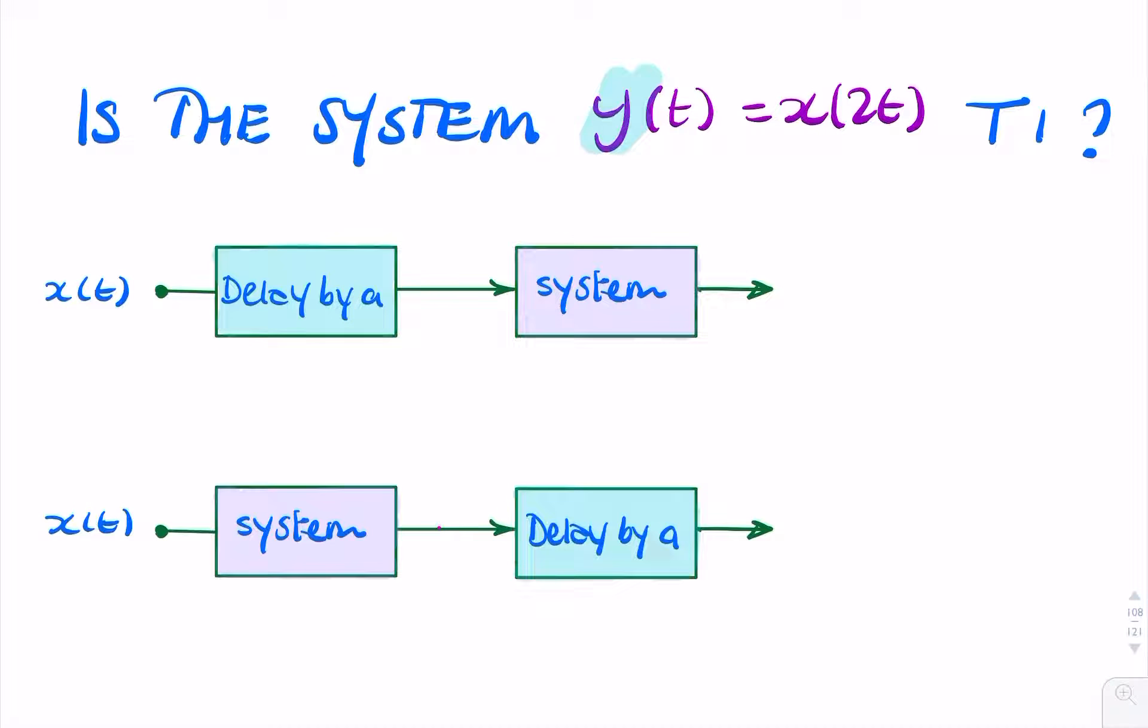In this question, we're given a system y of t equals x of 2t, and we want to check if it's a time invariant system.